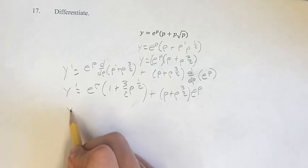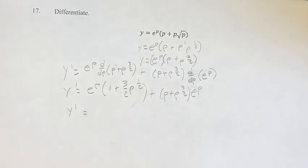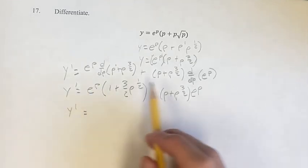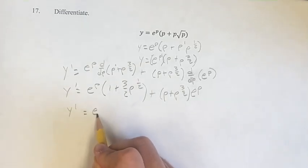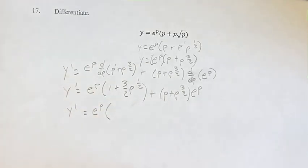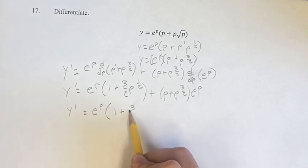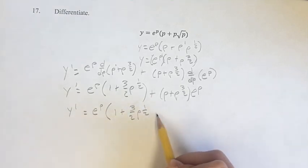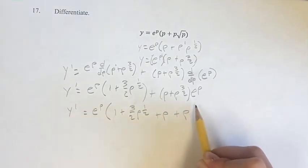Simplifying here, we notice that there is a common multiple of e to the p. And all of its factors are one plus three-halves p to the one-half, plus p, plus p to the three-halves. And so this is factoring by grouping.